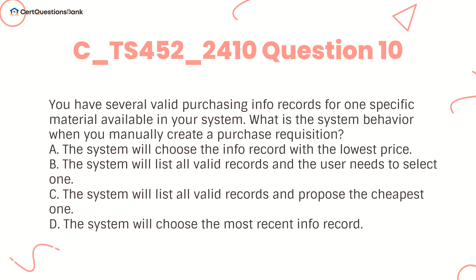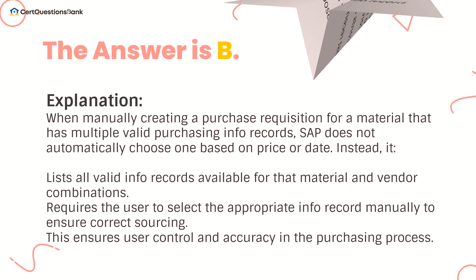You have several valid purchasing info records for one specific material available in your system. What is the system behavior when you manually create a purchase requisition? A. The system will choose the info record with the lowest price. B. The system will list all valid records and the user needs to select one. C. The system will list all valid records and propose the cheapest one. D. The system will choose the most recent info record. The answer is B.